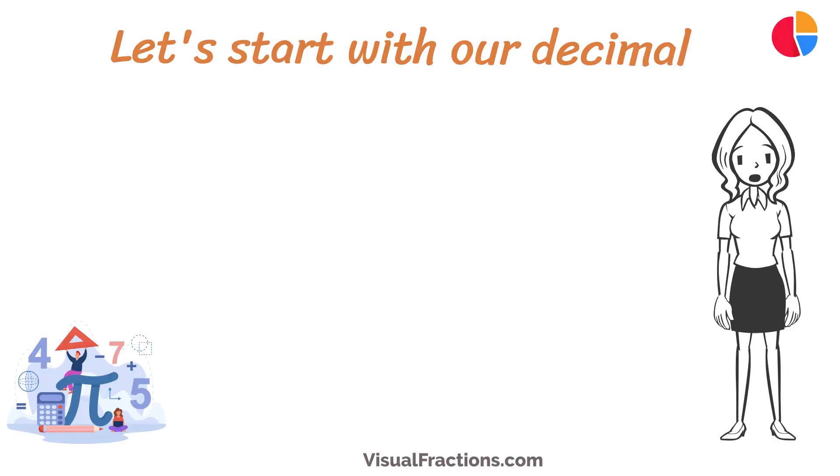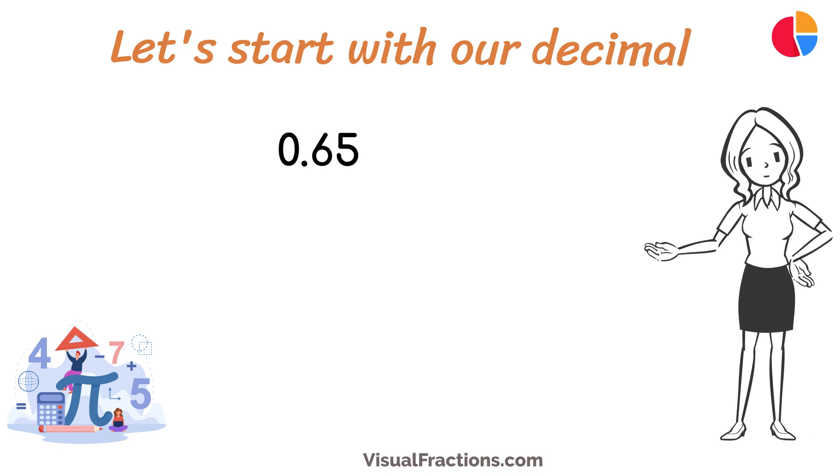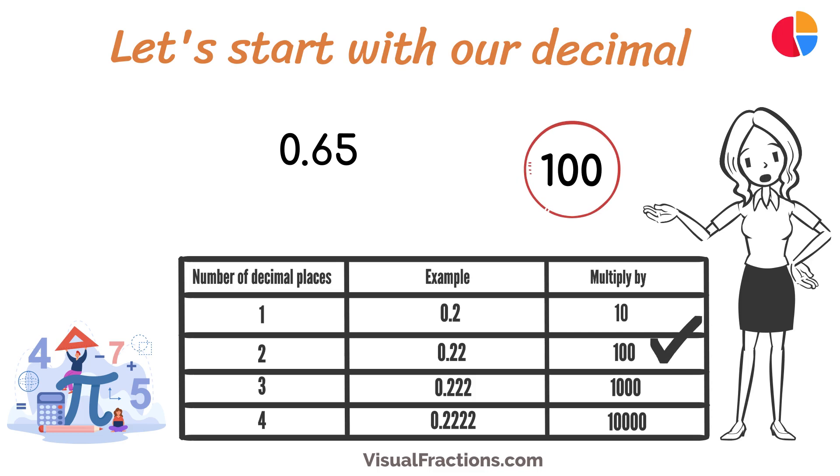Let's start with our decimal, 0.65. Notice there are two digits to the right of the decimal. This places it in the hundredths position.